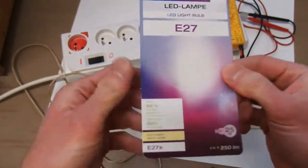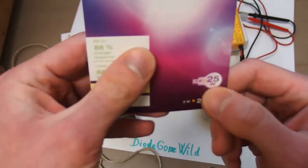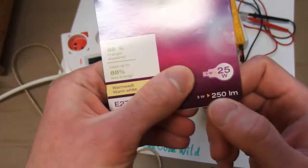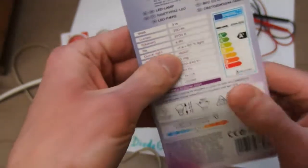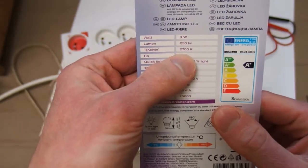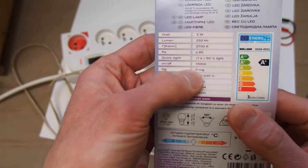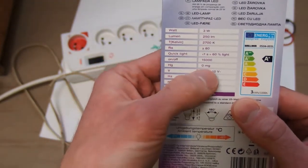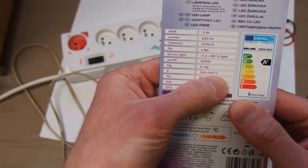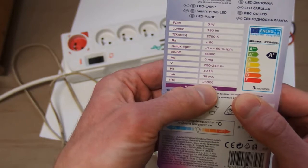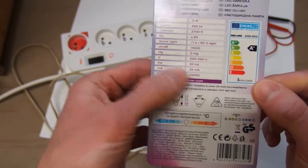Here is the label from it. It tells 25 watts equivalent and 250 lumens, and it should have warm white 2700 kelvins, no mercury, 220 to 240 volts 50 Hertz, and the service life should be 25,000 hours. It's really promising.